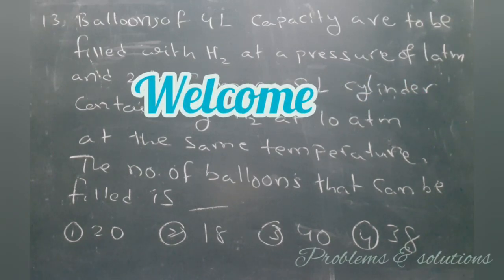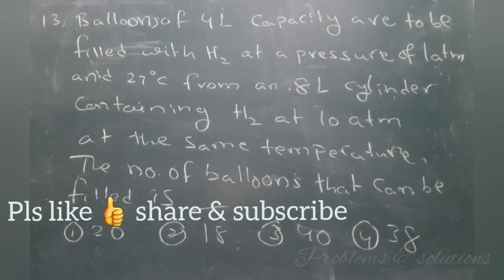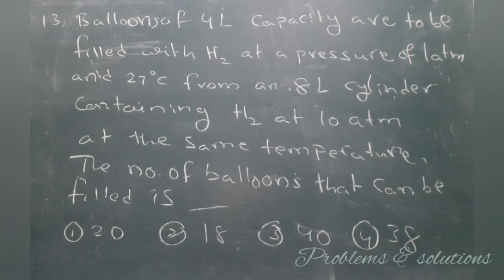States of matter, gases. Question 13: Balloons of 4 liter capacity are to be filled with hydrogen at a pressure of 1 atmosphere and 27 degrees centigrade from an 8 liter cylinder containing hydrogen at 10 atmosphere and the same temperature. The number of balloons that can be filled is, here are the given options.